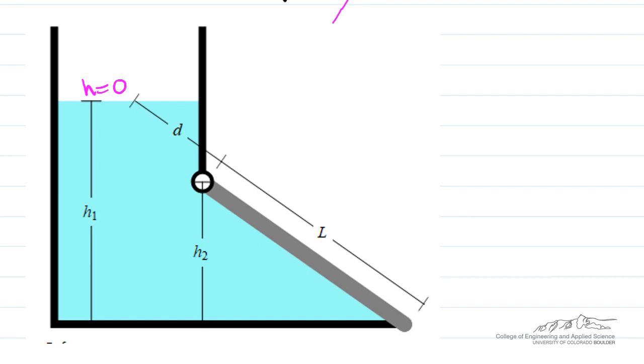And then on the diagonal, along the gate, y is going to be the variable. It's going to be zero here, and then y is going to equal d here, and at the end of the gate, y equals d plus l.